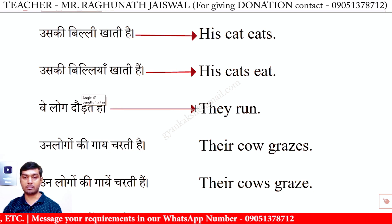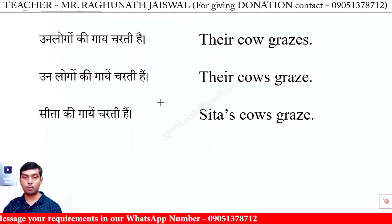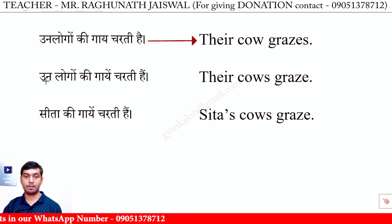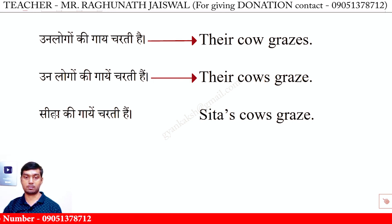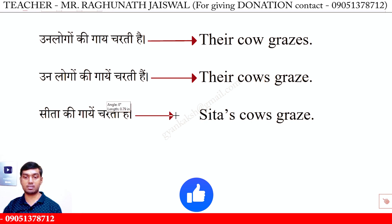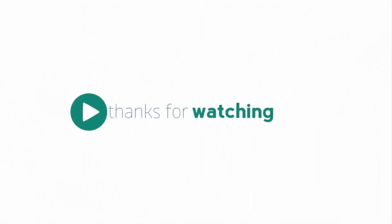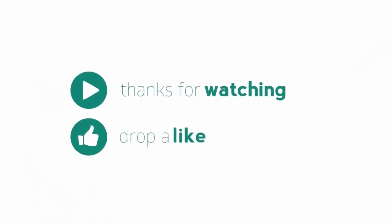वे लोग दौड़ते हैं — They run. उन लोगों की गाय चरती है — Their cow grazes. उन लोगों की गायें चरती हैं — Their cows graze. टीता की गायें चरती हैं — Tita's cows graze. उन लोगों की बिल्ली खाती है — Their cat eats.